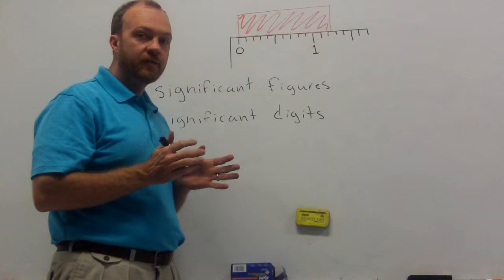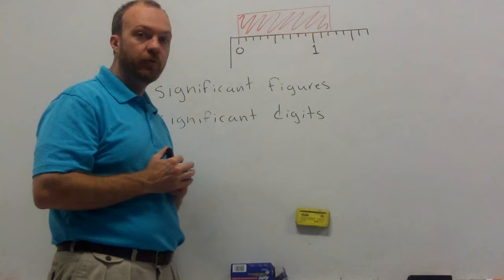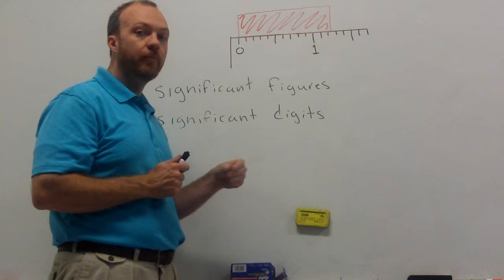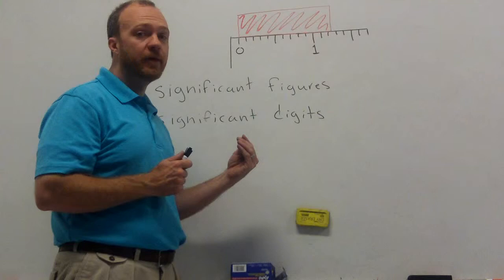Science is different than math. In math, we deal with numbers in the abstract, we deal with numbers in theory, and we can deal with numbers that are exact. In science, when we deal with numbers, we are usually doing so based on measurements. Now, occasionally we are doing so based on a definition, which is exact, and we can treat exact numbers.